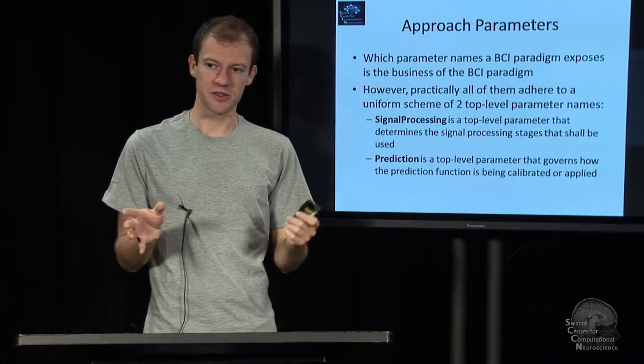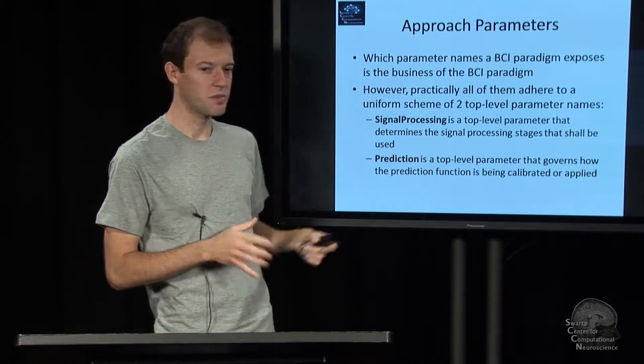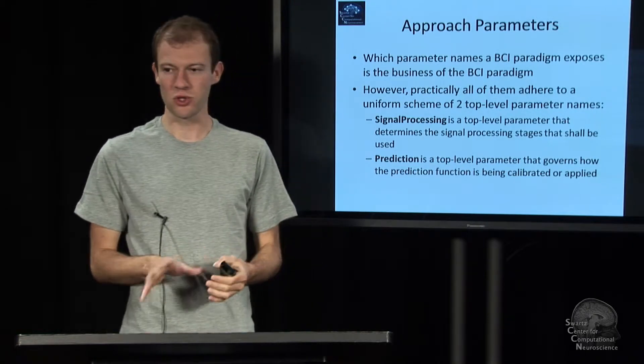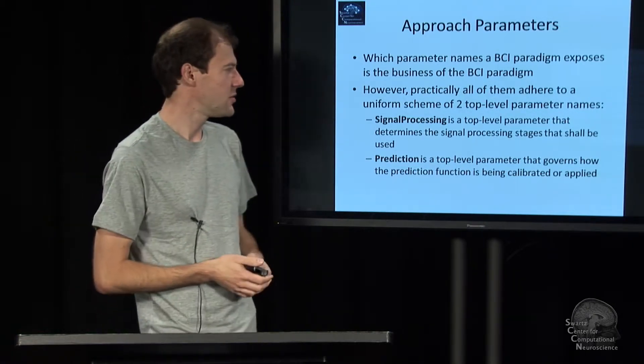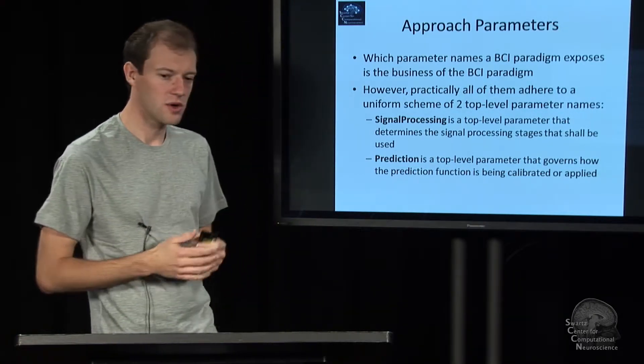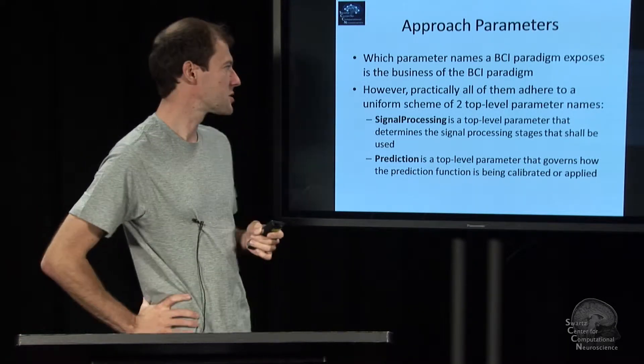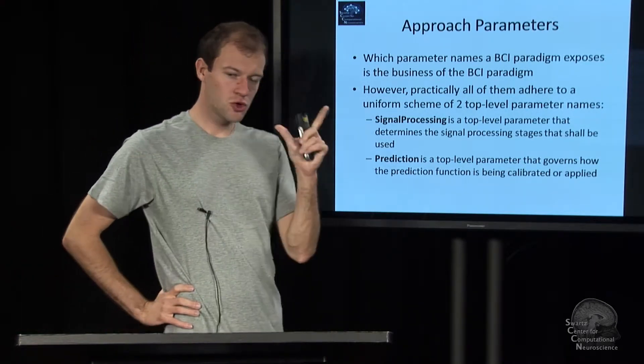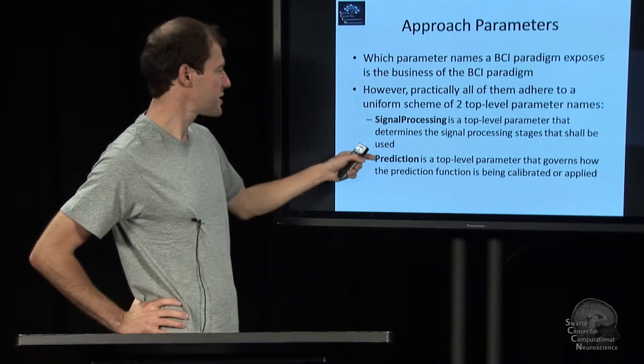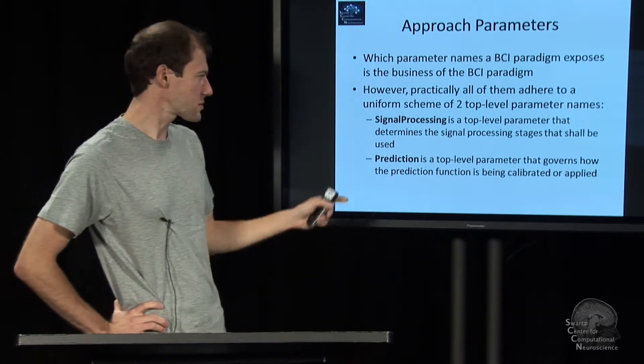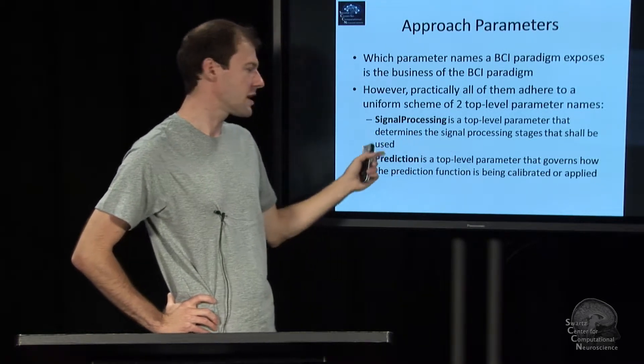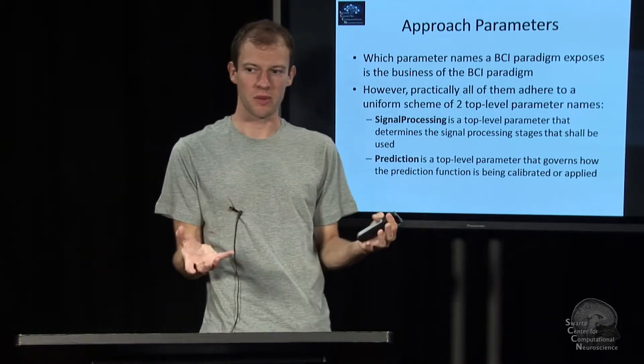Now there is no general rule for what parameters a BCI paradigm has. That's the business of the BCI paradigm. If you have a custom thing that has no notion of prediction functions, that wouldn't have this parameter. However, almost all paradigms in the toolbox have two top-level parameters: signal processing and prediction. The signal processing parameter governs everything that happens in your signal processing pipeline, which filters, how they're being set up and so on.